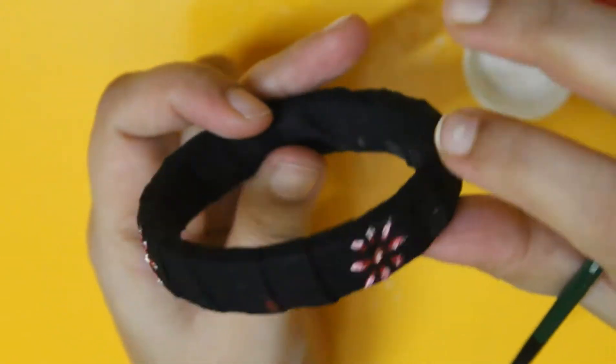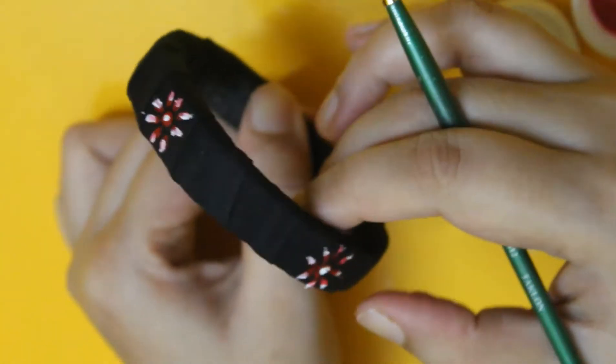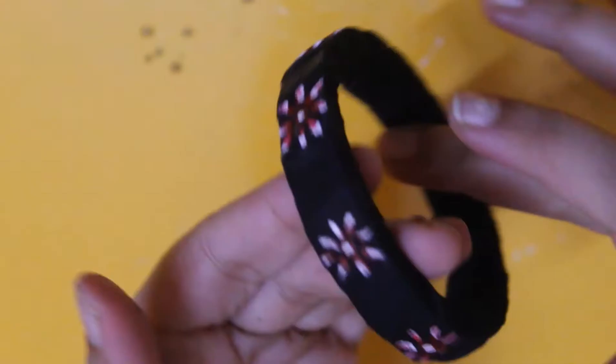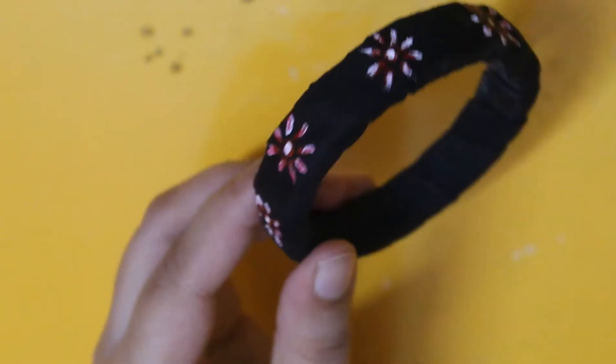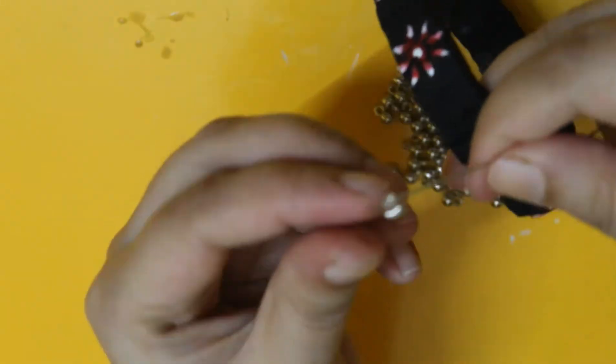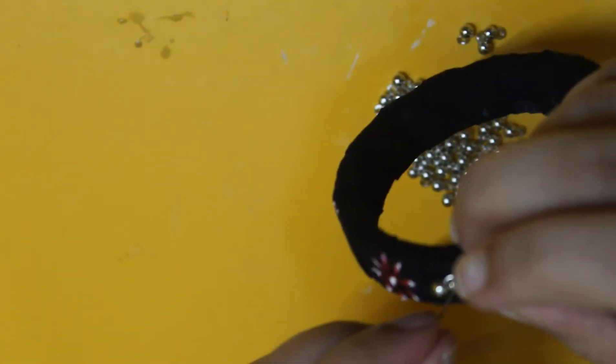Now I am drawing four more flowers on the midpoint of every two flowers. Now it's time to add a few trinkets in between all the flowers.